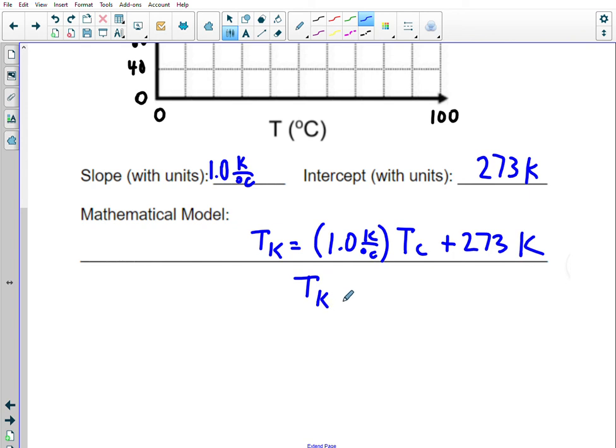The shorthand version of this one, I would just leave off the one because one times TC is still that value, plus 273. So if you're doing a quick conversion between Celsius and Kelvin, all you do is add 273 to that Celsius temperature. And again, the reason why Kelvin temperature seems so large is because zero Kelvin is incredibly cold. So if you're measuring general lab temperature, even if it's kind of cool in the room today, it's very, very warm compared to absolute zero.